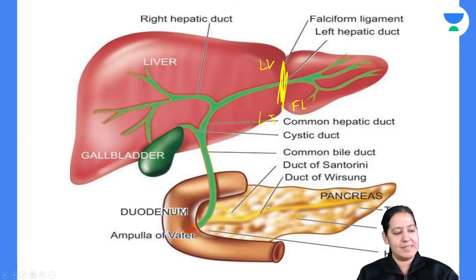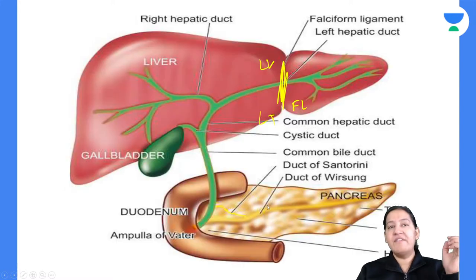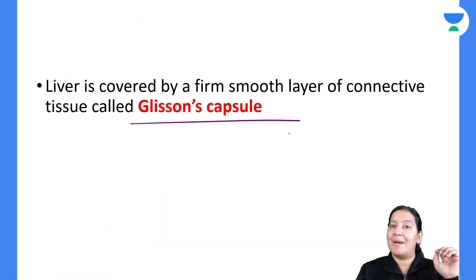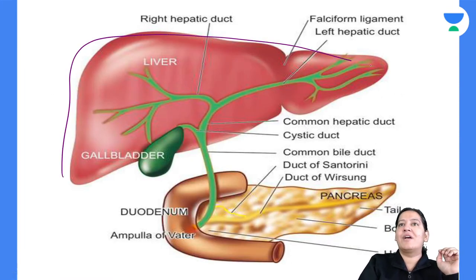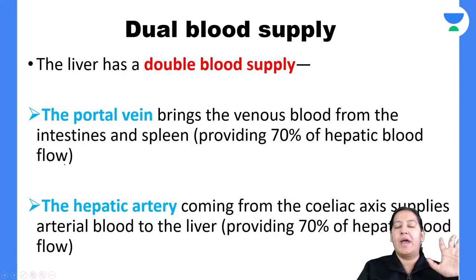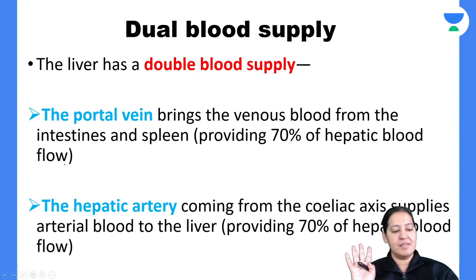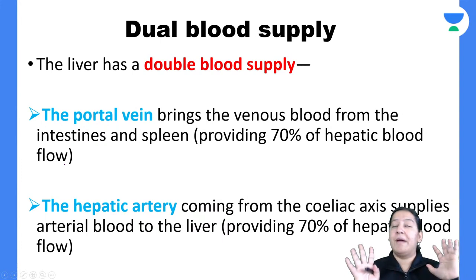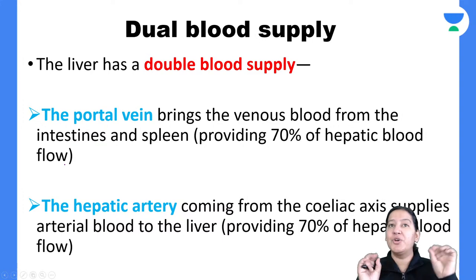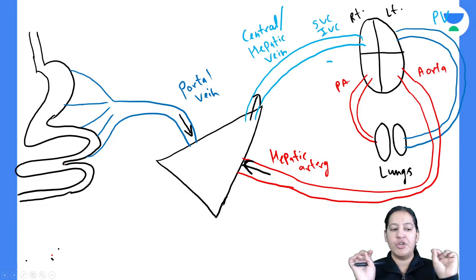The liver is covered by a capsule known as Glisson's capsule. This is an important MCQ: the liver is covered by Glisson's capsule. Now you should understand the dual blood supply of the liver, because without understanding it you cannot understand the portal triad.